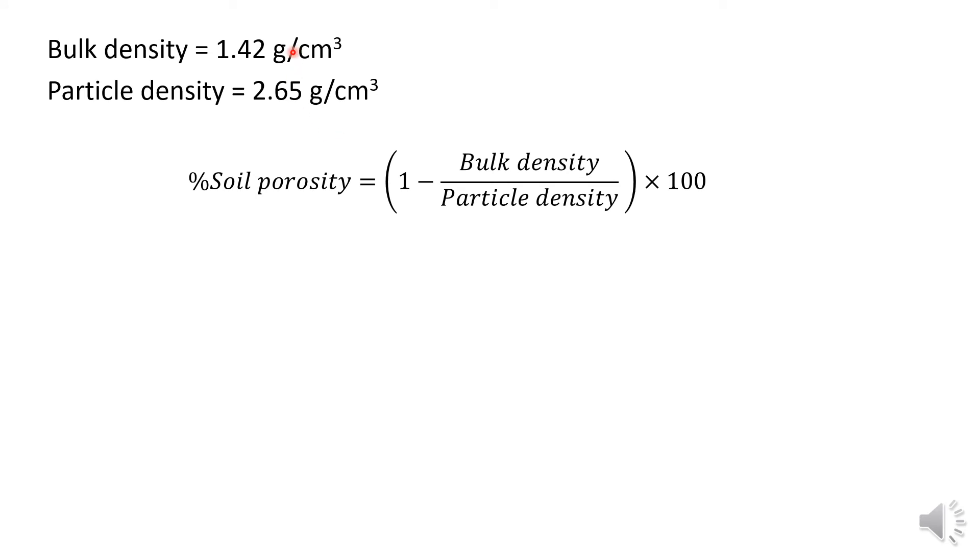We will put these values into the equation. Bulk density is 1.42 grams per centimeter cubed, while particle density is 2.65 grams per centimeter cubed.